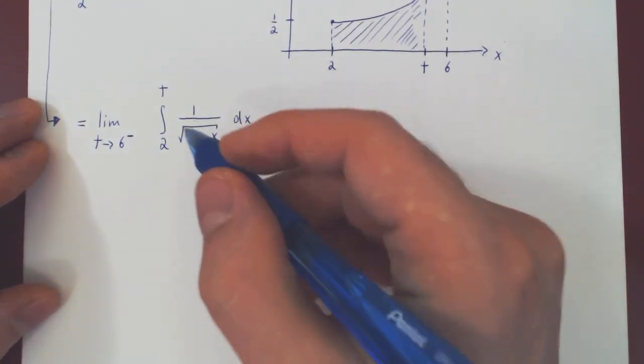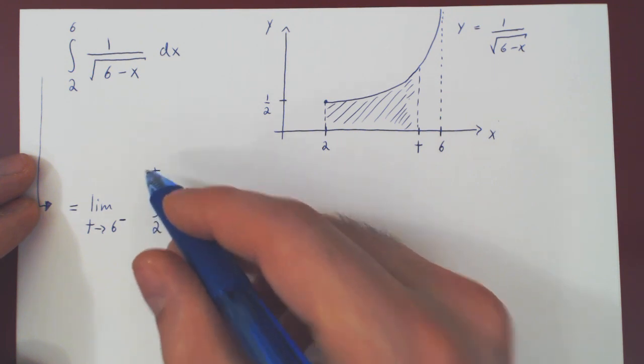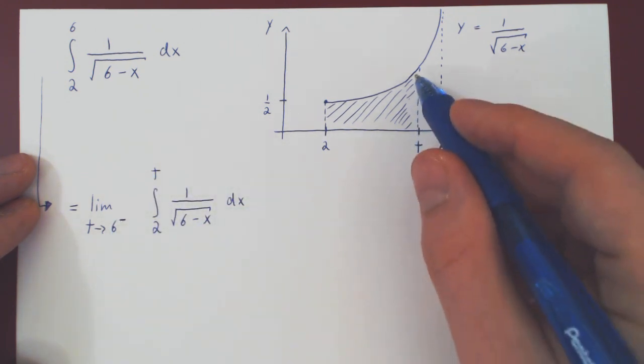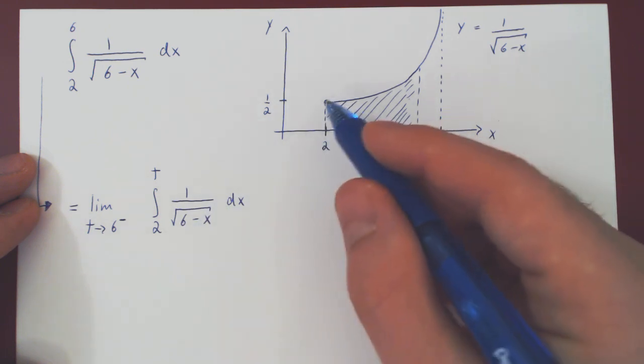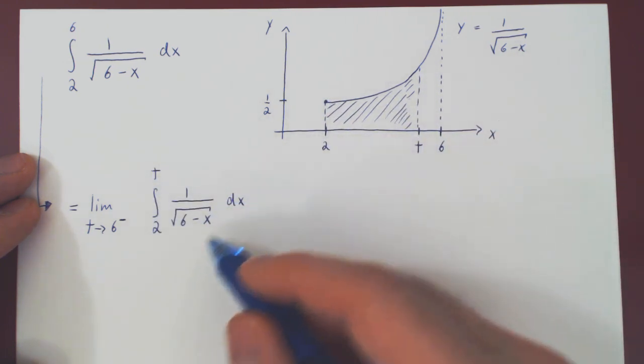So now, as always, from 2 to t, when t is less than 6, we have a continuous function over a finite interval, and we can use the fundamental theorem of calculus.